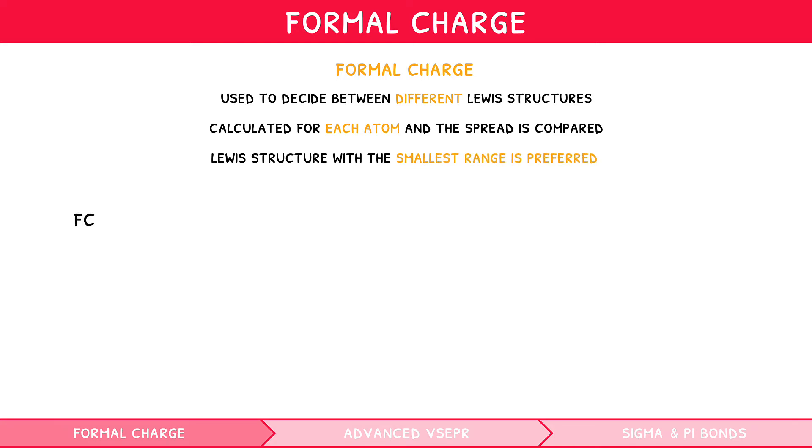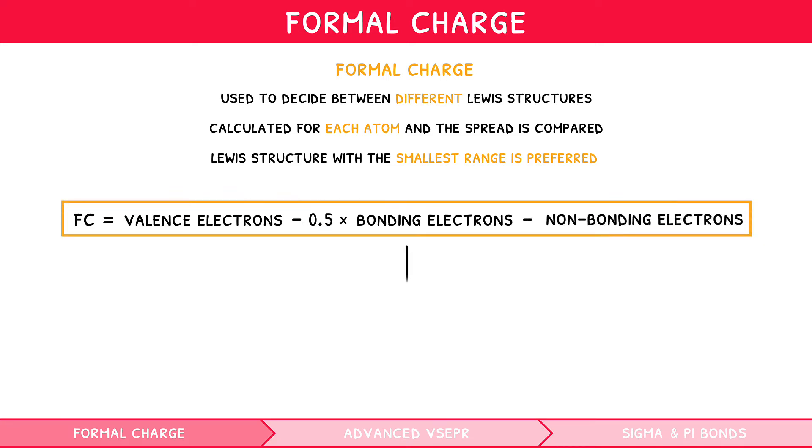The formula for Formal Charge is number of valence electrons subtract 0.5 multiplied by number of bonding electrons subtract number of non-bonding electrons. Colloquially, this can be referred to as valence electrons subtract the number of bonding lines, subtract the number of lone electrons.